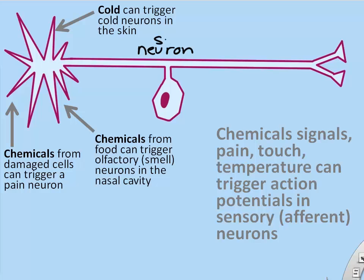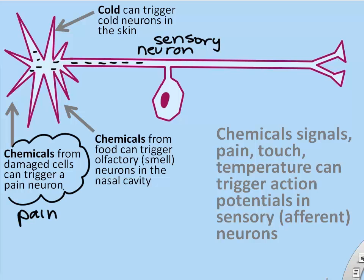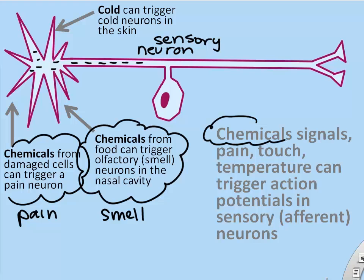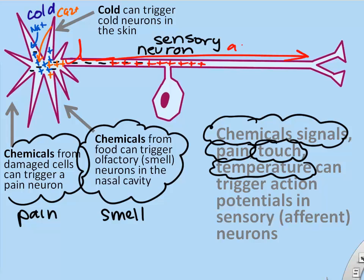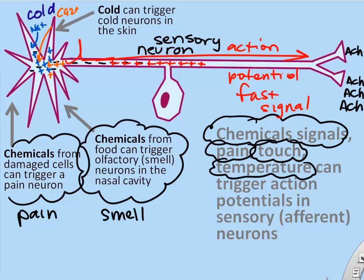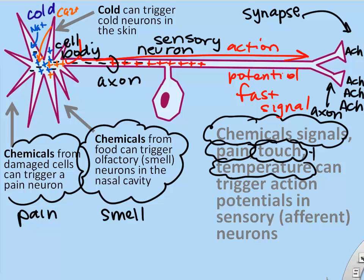For sensory neurons, many things can trigger an action potential — a pain signal, a smell chemical, cold temperature — any of these can cause sodium or sometimes calcium to rush into the neuron, triggering the action potential. Lots of things can trigger action potentials in neurons, from chemicals to physical touch to temperature, and then the neuron usually releases a chemical that has some effect in the body.